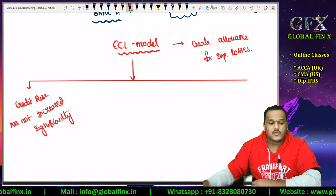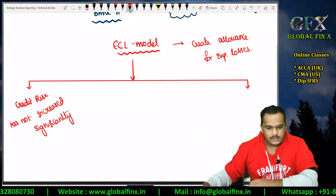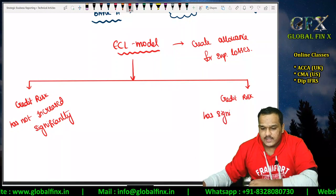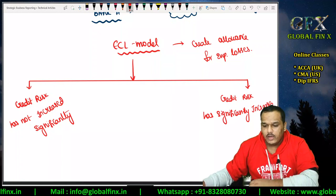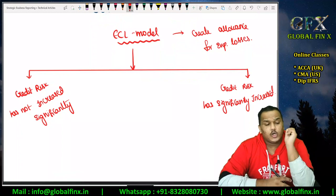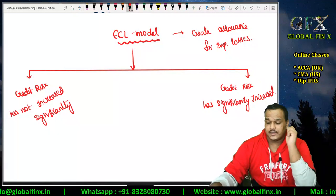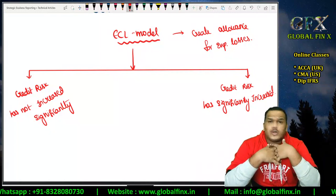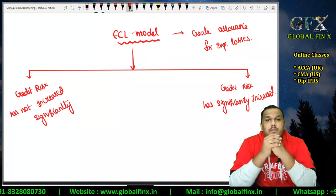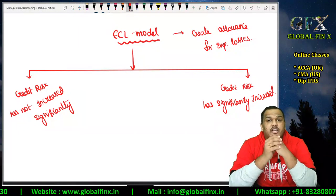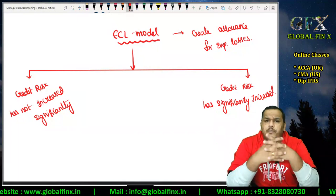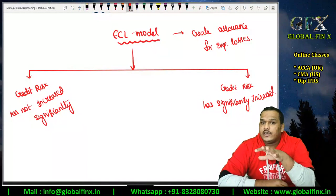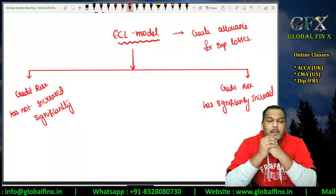The second situation is where credit risk has significantly increased. Now you might be asking what do we mean by significant increase in the credit risk? Unfortunately, IFRS 9 does not define what a significant increase means. Credit risk will always be there — even the best people might not be able to repay their loans at some point, they might default on an installment or interest payment at some point down the lane.